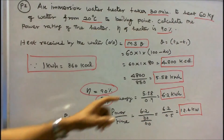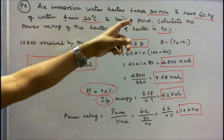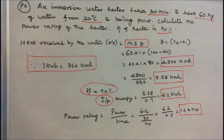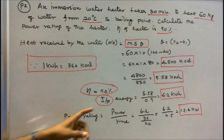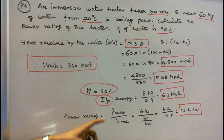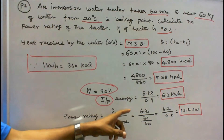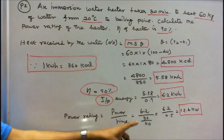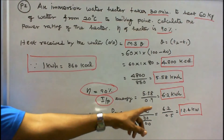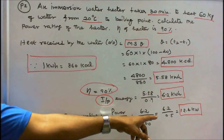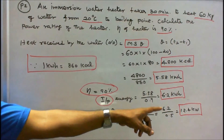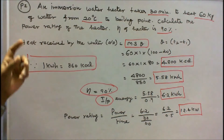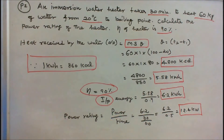Once we know the input energy in kWh and the time of 30 minutes, we can find the power rating. Power rating = energy divided by time = 6.2 divided by (30/60) = 6.2 divided by 0.5 = 12.4 kW. The power rating of the heater is 12.4 kW.